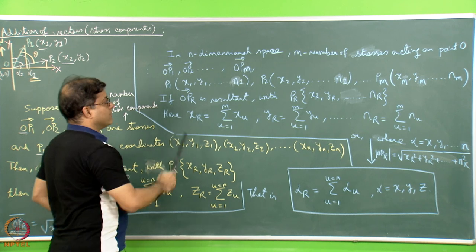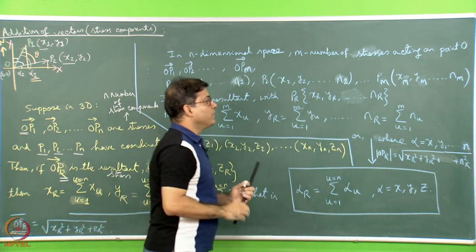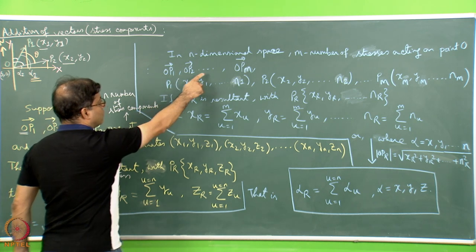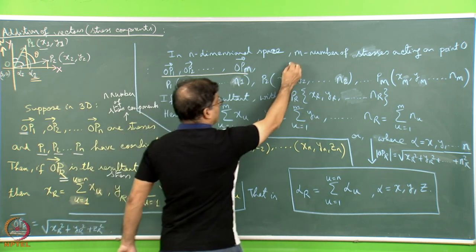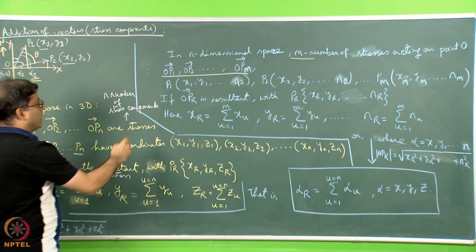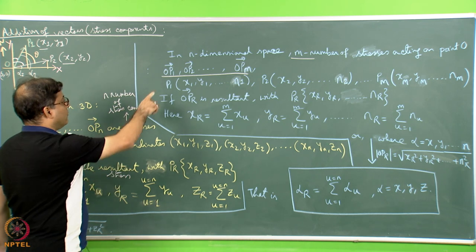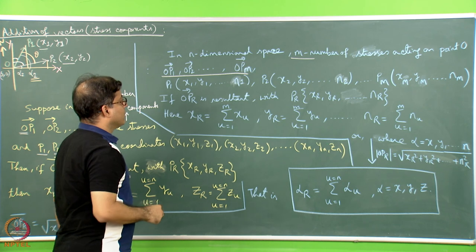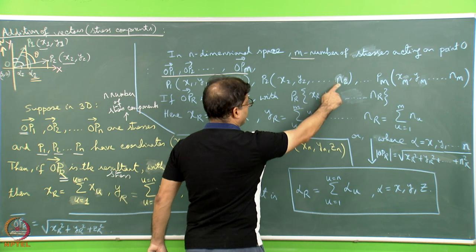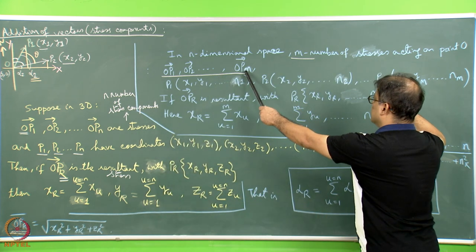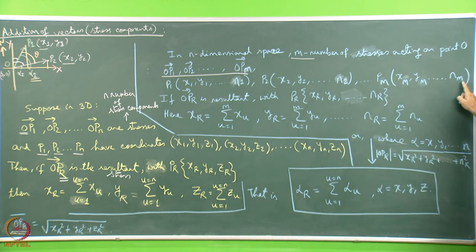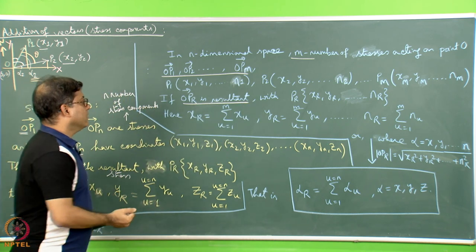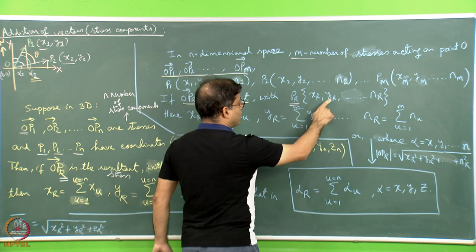Now we move into an n-dimensional space where there are m stresses acting on point O, which is the origin of the n-dimensional space. Those stresses are represented by OP1, OP2, up to OPm. The coordinate of P1 in n-dimensional space is (x1, y1, ... , n1), for P2 it is (x2, y2, ... , n2), and for Pm it is (xm, ym, ... , nm). If OPR is the resultant stress in the n-dimensional space, then the coordinate of PR is (xr, yr, ... , nr).